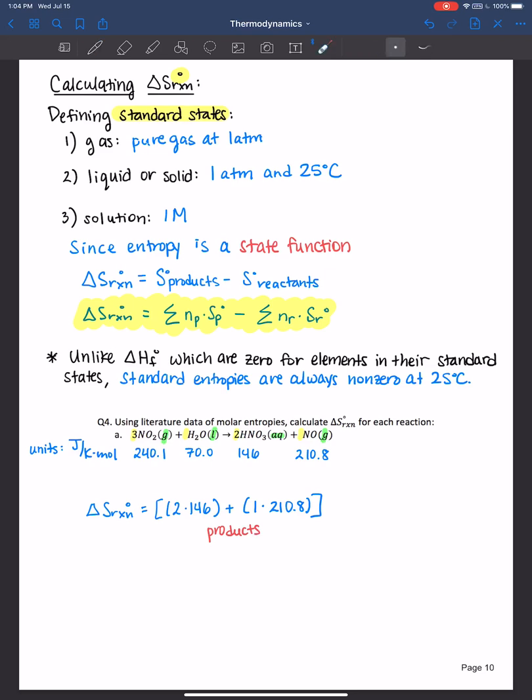And as I've said before, these numbers came from the stoichiometric coefficients. Minus the reactants, so 3 times 240.1 for the nitrogen dioxide plus 1 times 70 for the water. These are the reactants. In addition, we took into account the stoichiometric coefficients. So when we plug that into our calculator, we get negative 288 joules per kelvin.